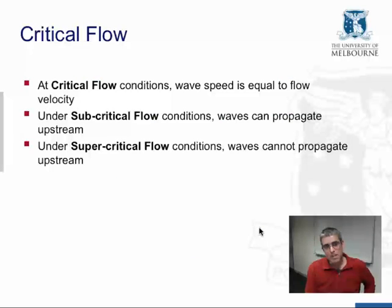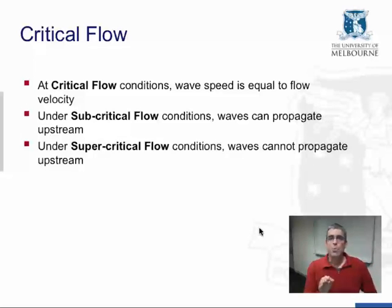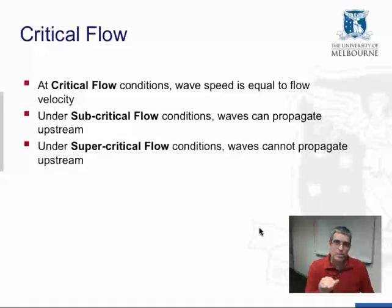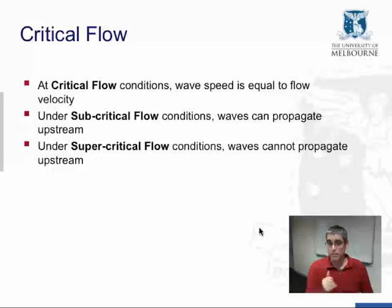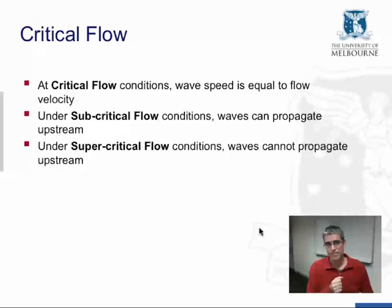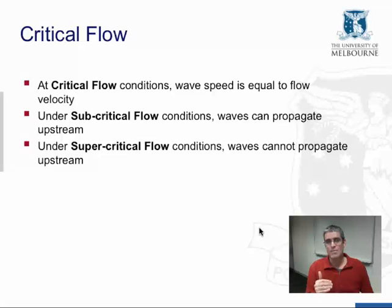Critical flow is the condition where the wave speed is equal to the flow velocity. It's a threshold condition at a particular flow depth — the critical flow depth. If the flow depth is above the critical depth, we have subcritical flow conditions, where waves can propagate upstream. If the flow depth is less than the critical flow depth, we have supercritical flow conditions, and under supercritical flow the waves can't propagate upstream.